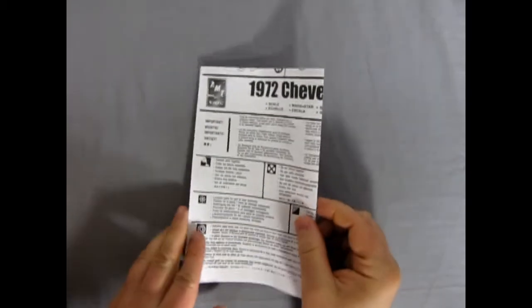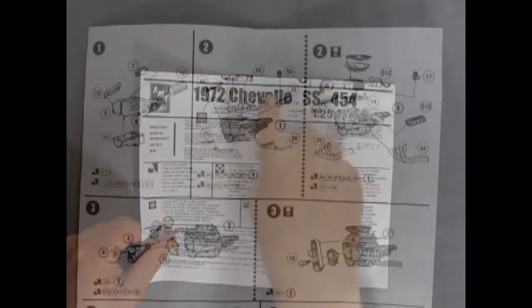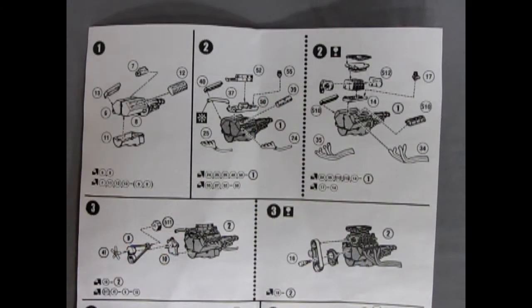Here's our instruction sheet for a 1972 Chevy Chevelle SS 454. Here we are with our engine assembly. And can you dig this? There's actually three engines you can build out of this thing.